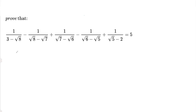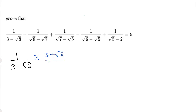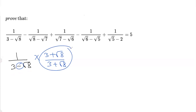Starting with the first part: it is 1 over 3 minus root 8. We rationalize by multiplying and dividing by 3 plus root 8. As you know, if your denominator is in the form of a minus b, we multiply and divide by a plus b.